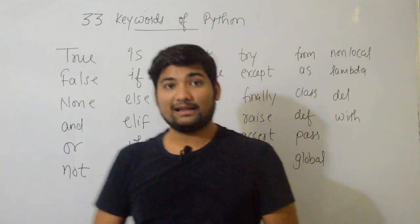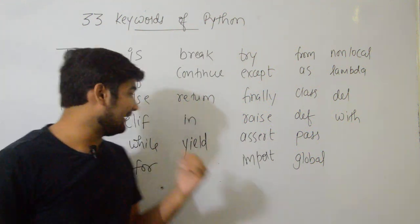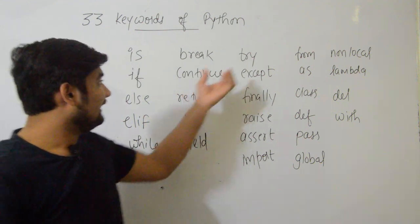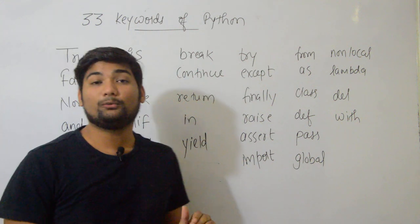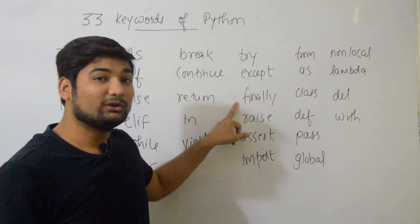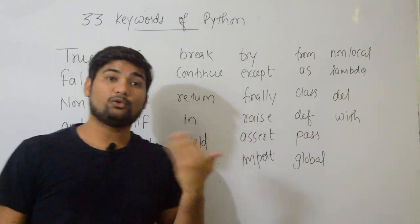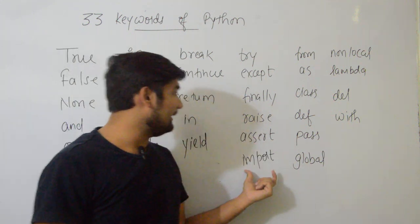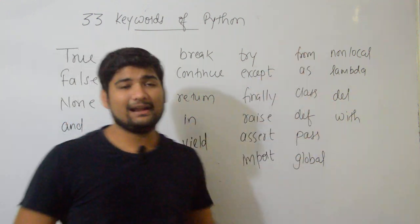Continue - this is also for loops. Return - for functions. In, this will be used. Yield. Try - like we have Try, Accept, Catch, Finally. When we want to throw an exception, we use Raise. Assert. Import, From, As, Class, Def, Pass, Global, Non-Local, Lambda, Del, With.